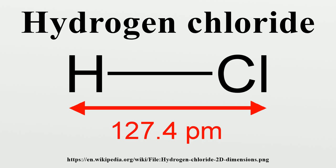Frozen hydrogen chloride undergoes a phase transition at 98.4 K. In both structures the chlorine atoms are in a face-centered array. However, the hydrogen atoms could not be located. Analysis of spectroscopic and dielectric data and determination of the structure of DCl indicates that hydrogen chloride forms zigzag chains in the solid, as does HF.